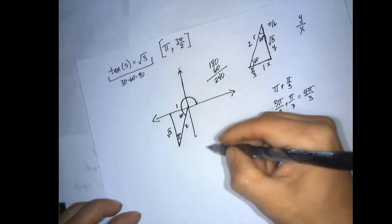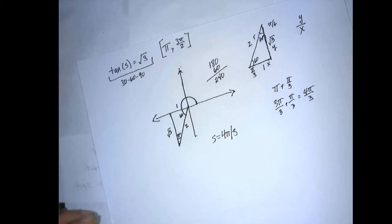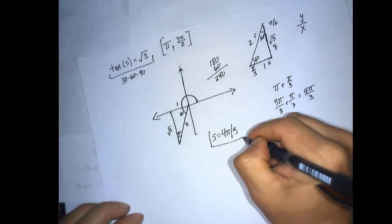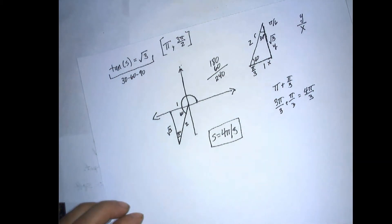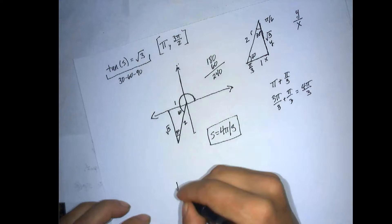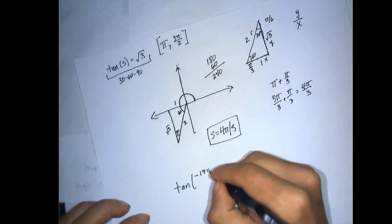So the S is 4 pi over 3. All right, the next one is similar, except it's tangent negative 17 pi over 3.